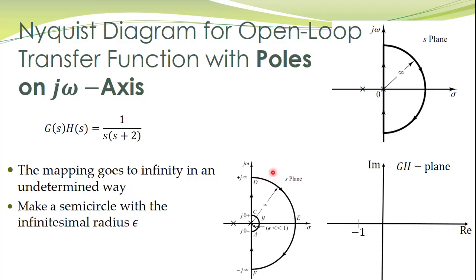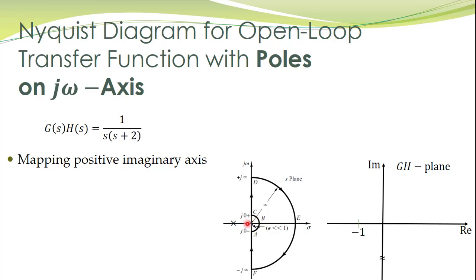So all our analysis which we performed earlier is still applicable. The only difference is that now we have a new contour and we have to learn how to obtain its mapping. The mapping of this contour is also simple. We start with the mapping of the positive imaginary axis. Now frequencies do not start from 0 — they start from 0+, that is, slightly larger than 0.